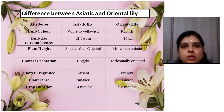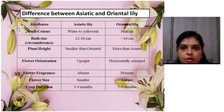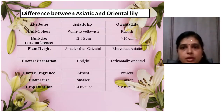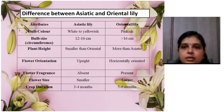Regarding the basic differences between Asiatic and Oriental lily: lily is basically a temperate climate flower crop. However, a number of species have been introduced into subtropical conditions. Not all lily types can grow in subtropical conditions — Asiatic lily and LA lily perform better because they can tolerate heat compared to Oriental and other types.